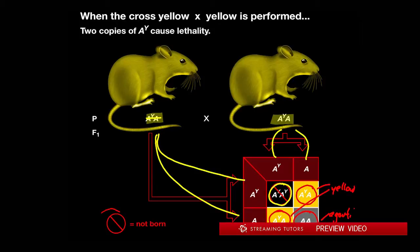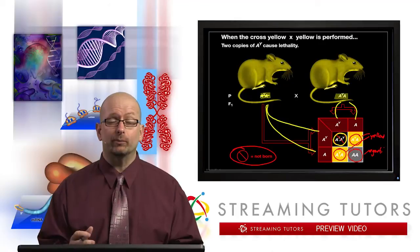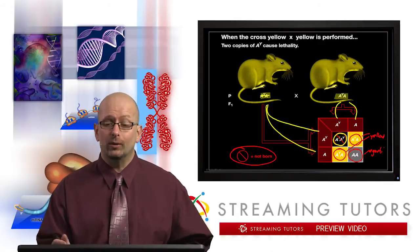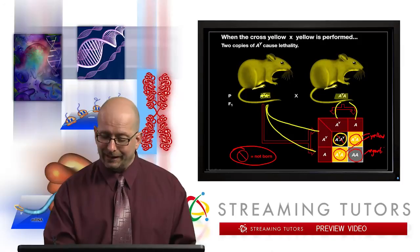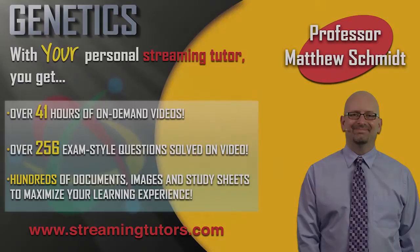Well, it turns out this little cross through it means that these types of organisms, while they can be conceived, they die before they even implant. You never will see them amongst the offspring even being born. So since they never come into being, it's almost like...